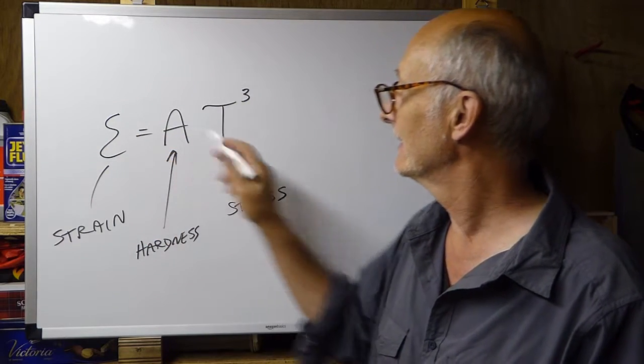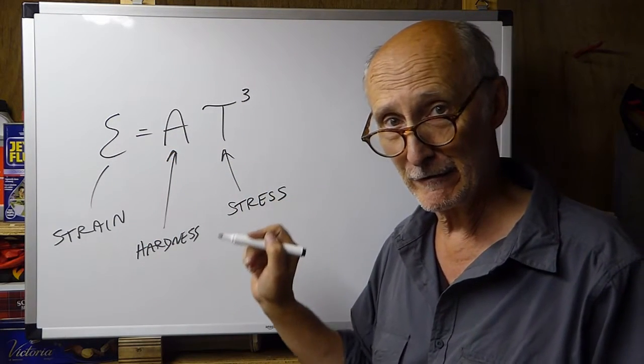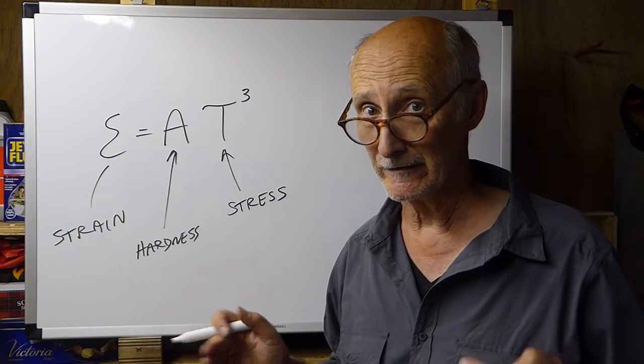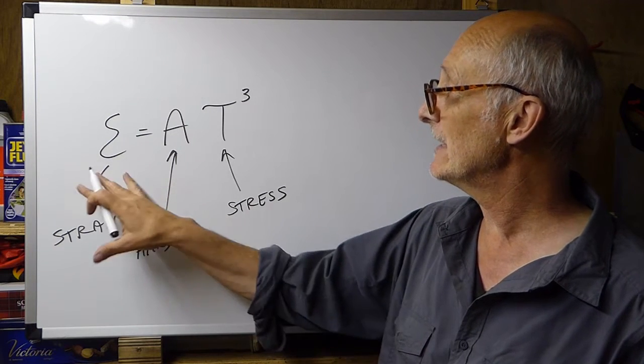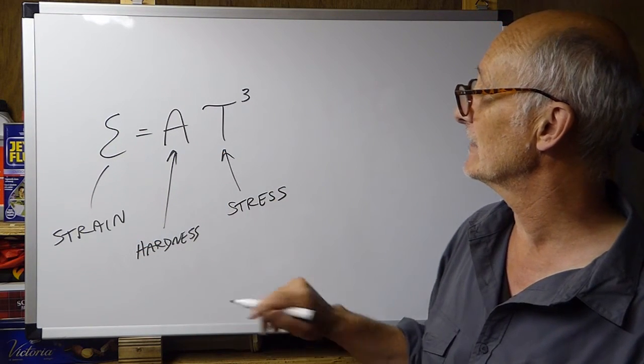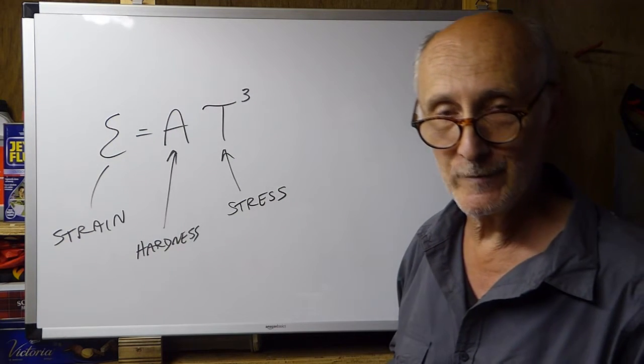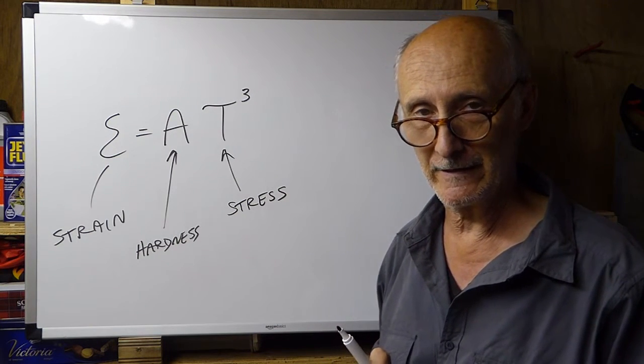So, the strain goes as the cube of the stress. Now, what that means is that if we increase the stress a little bit, we increase the strain a lot. So, the strain is a function of the hardness of the material, the stress we apply, but a cubic exponent of the stress that we apply.